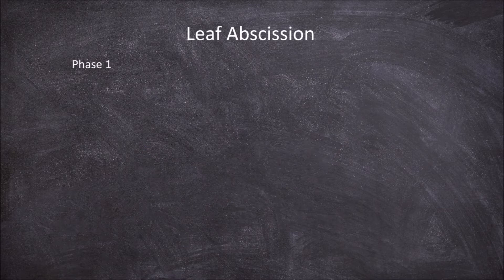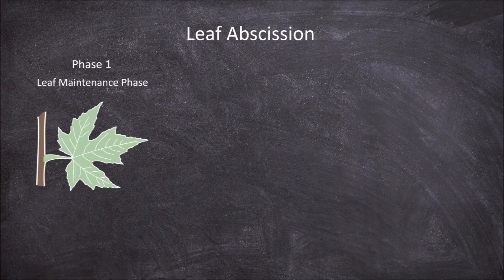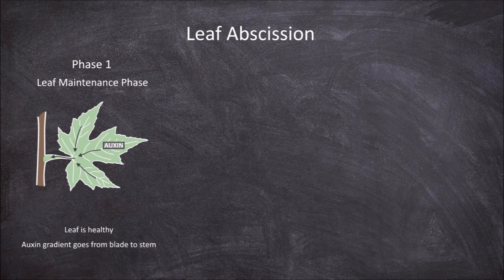There are three phases that the leaf goes through in the process of leaf abscission. The first of these is the leaf maintenance phase. In this phase the leaf is healthy and a fully functional component of the plant. The auxin gradient that goes from the blade of the leaf to the stem continues to flow, and the cells of the abscission zone stay unchanged as auxin inhibits leaf abscission.